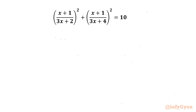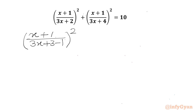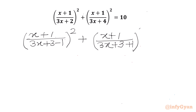Let's get started by writing our equation as: (x+1)/(3x+2) — we can write (3x+3−1)² plus (x+1)/(3x+3+1)², which is (4)², equal to 10.